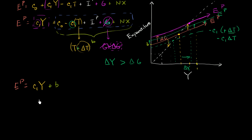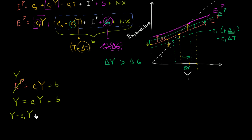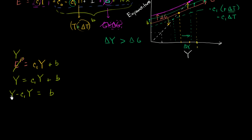We know an economy is in equilibrium when planned expenditures equals output. So we set planned expenditures equal to aggregate output, which is the same as aggregate income. We get Y = C1·Y + B. Subtracting C1·Y from both sides gives Y − C1·Y = B. Factoring out Y gives Y(1 − C1) = B, and dividing both sides by (1 − C1) lets us solve for equilibrium income.